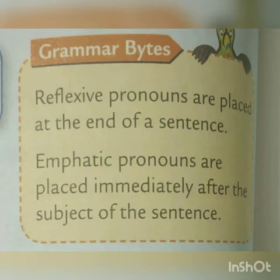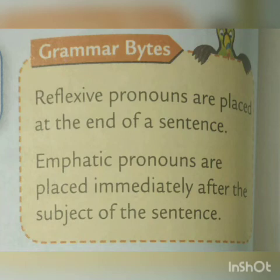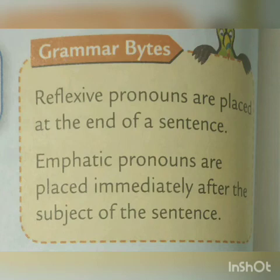To make it more clear, here are a few examples. 'He himself gave us this news.' Here 'he' is the personal pronoun and 'himself' is the emphatic pronoun placed immediately after the personal pronoun 'he'. Next: 'I myself did the homework.' 'I' is the personal pronoun and 'myself' is the emphatic pronoun placed just after 'I'. So, reflexive pronouns are placed at the end of a sentence, while emphatic pronouns are placed immediately after the subject.